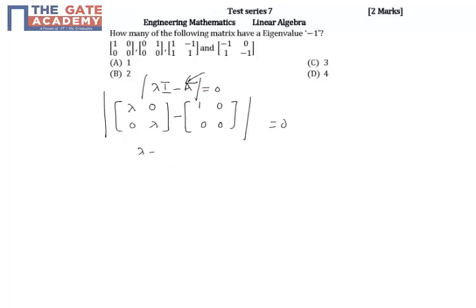This will be lambda minus 1, 0, 0 lambda. Its determinant value equals 0. This implies lambda minus 1 times lambda equals 0. So the eigenvalues are 1 comma 0.